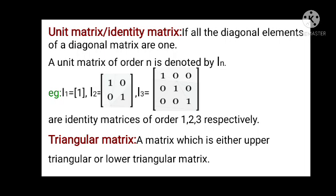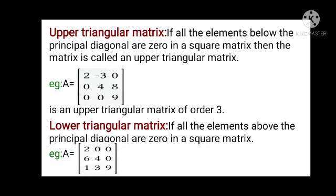A matrix can either be upper triangular or lower triangular. Coming to the upper triangular matrix: if all the elements below the principal diagonal are 0 in a square matrix, then the matrix is called an upper triangular matrix. For example, the principal diagonal is 2, 4, 9 and the elements below are 0 — that matrix is upper triangular. The order is 3 by 3, and this applies only to square matrices.